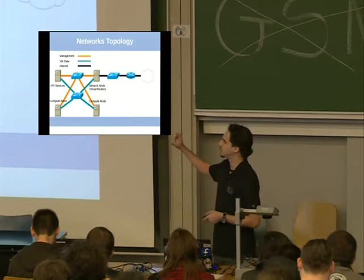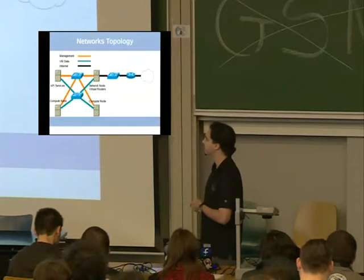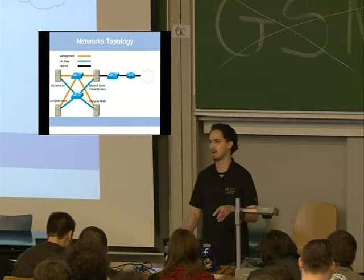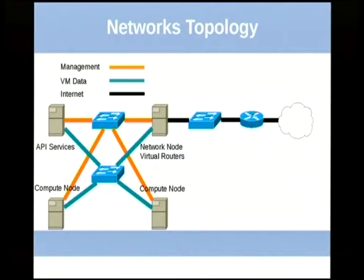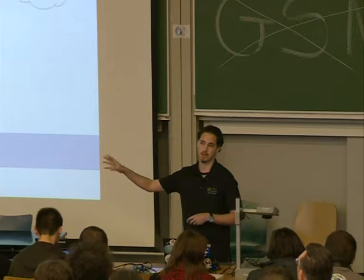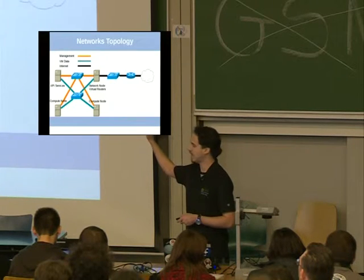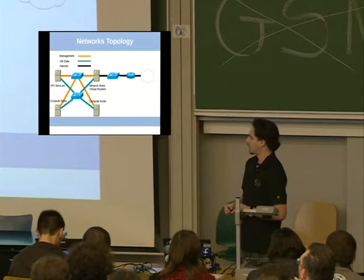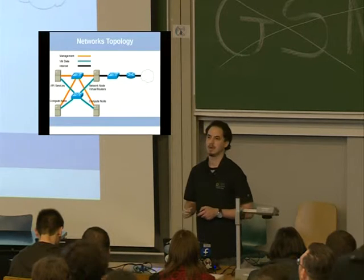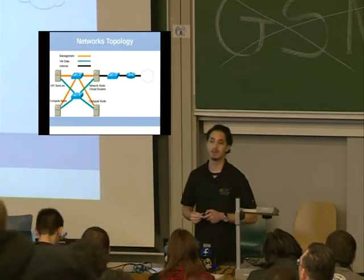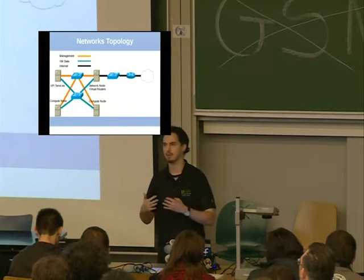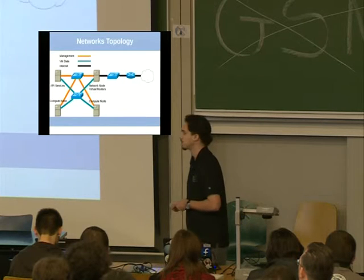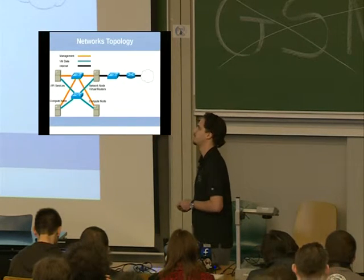As you can see, we have two different physical networks. The orange-ish stuff is for management traffic — like telling a compute node to bring up a new VM. Then we've got another physical network just for VM traffic, for VMs talking to each other and outside of the cloud. You could also just use two different VLANs. But the point of this slide is to mention that we're only going to be talking about the VM data network — just the teal network in this case.